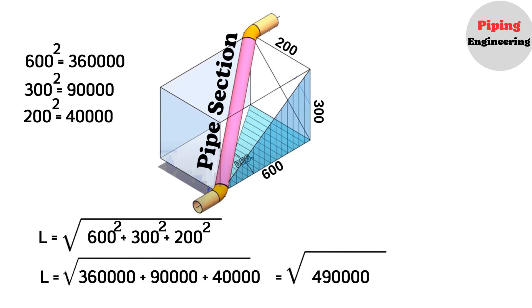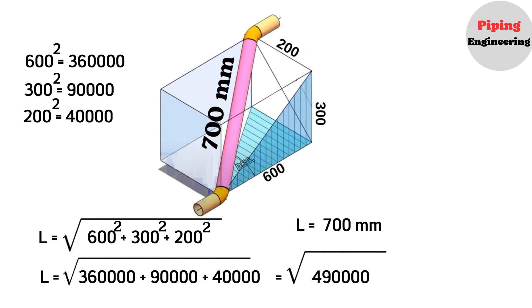Calculating the square root, L is almost equal to 700 mm. So, the length of this pipe section is approximately 700 mm.